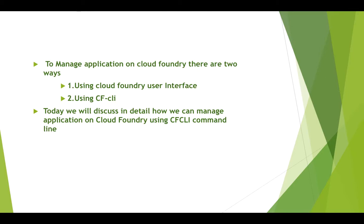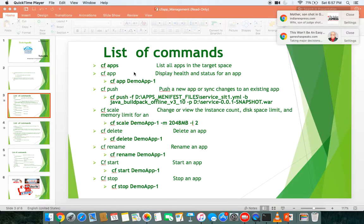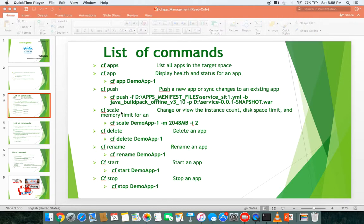I created three sets of commands, but in today's lecture I will cover the first set. Let me give you a brief of these commands. `cf apps` provides the list of all applications currently deployed in a target space on Cloud Foundry. `cf app <app-name>` displays the health and status of a particular app — for example, `cf app demo-app` to see the health and status of a specific application. `cf push` was already discussed in the last lecture, so we are not going to discuss it today.